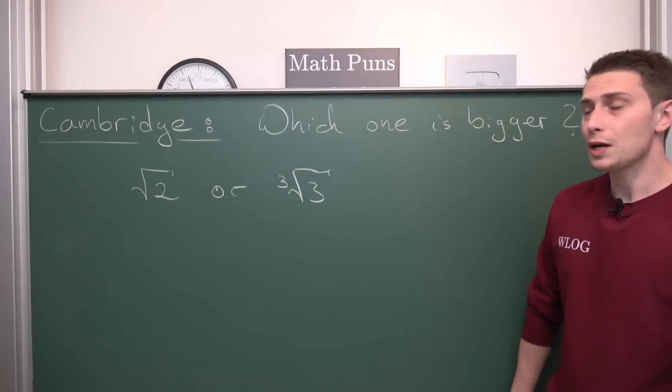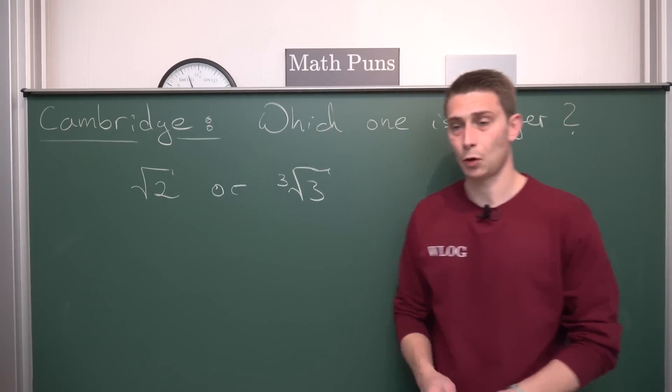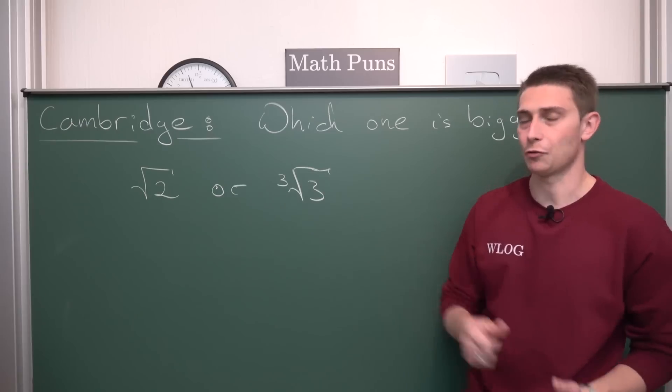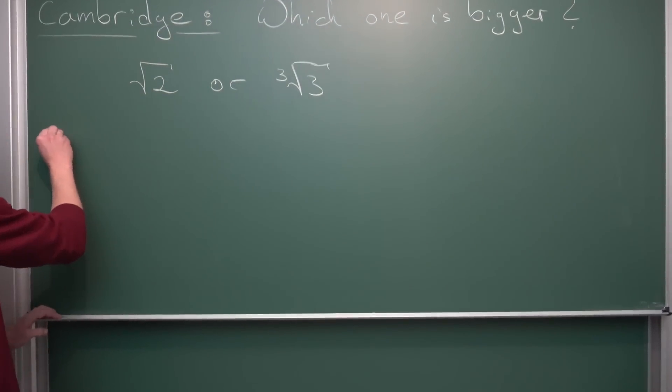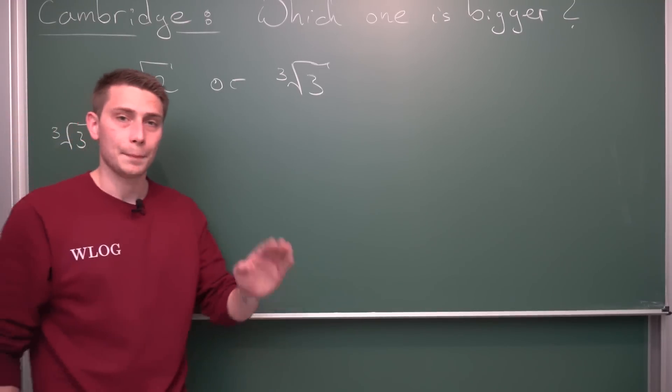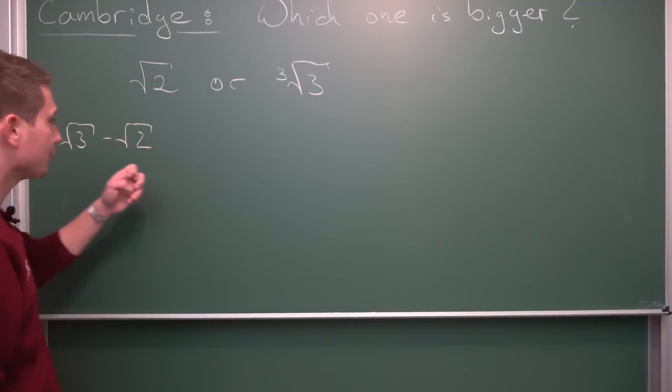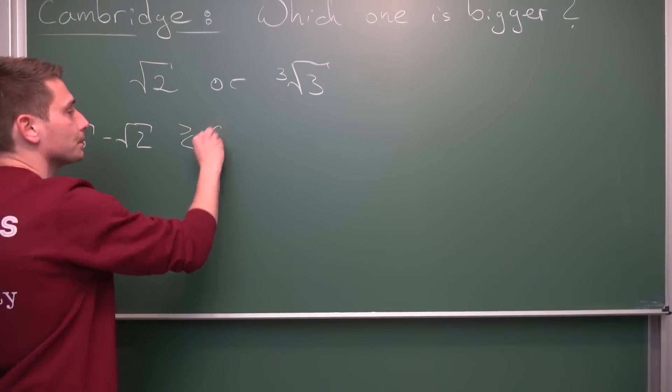So for my method, what I'm going to do is I'm going to take a look at difference of those two roots. Let me elaborate on this a little bit. Maybe what we are going to do is we are going to take a look at the cube root of 3 minus the square root of 2 or the other way around.